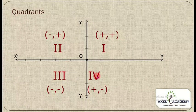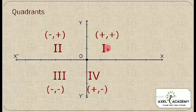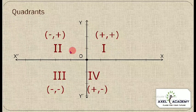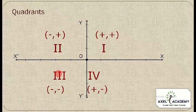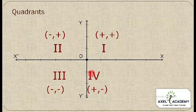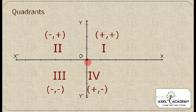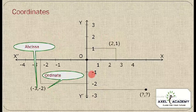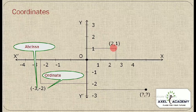In the first quadrant, both x and y are positive. In the second quadrant, x is negative and y is positive. In the third quadrant, both x and y are negative. In the fourth quadrant, x is positive and y is negative. The center point is the origin.